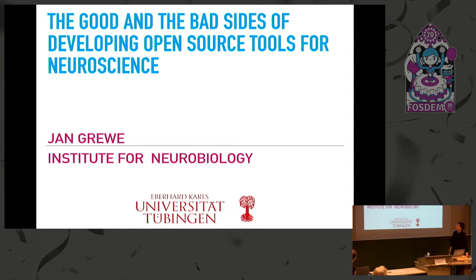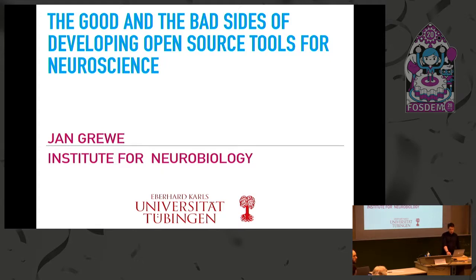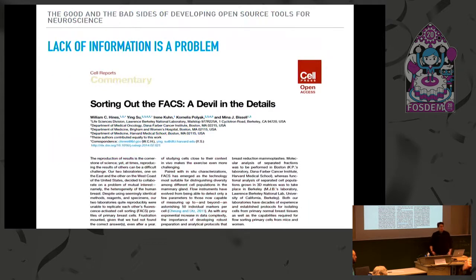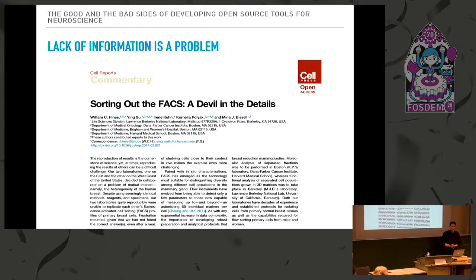I want to talk about the good and the bad sides of developing such tools for neuroscience, and give you my ideas about these things. We start off with something that is kind of serious, or has become serious in the scientific community: this is the reproducibility crisis. I picked a few older papers that show these effects quite nicely.